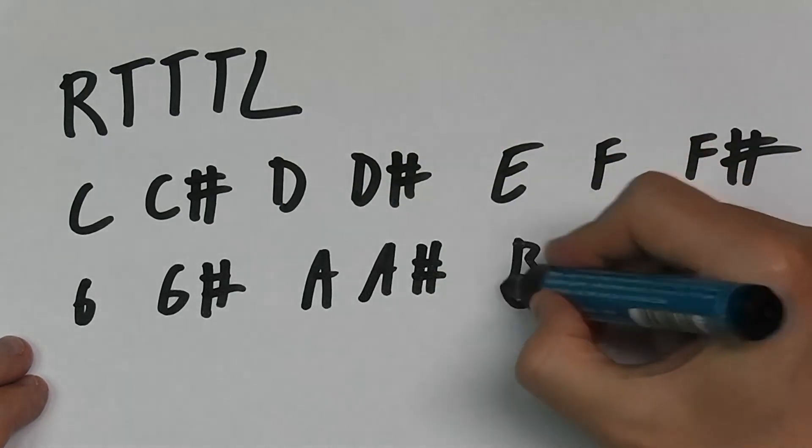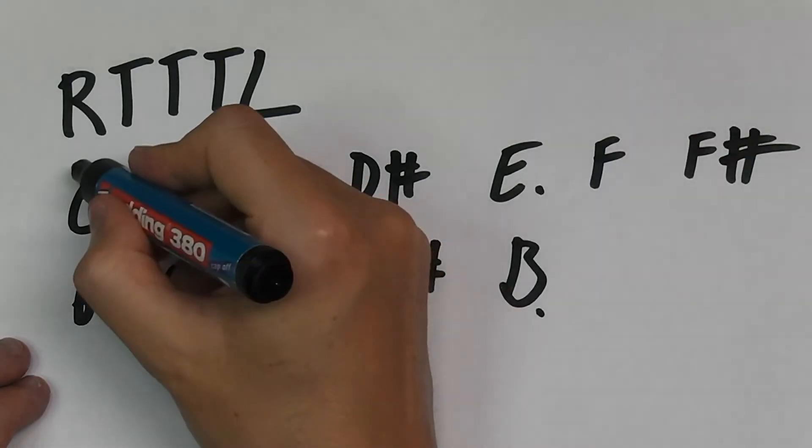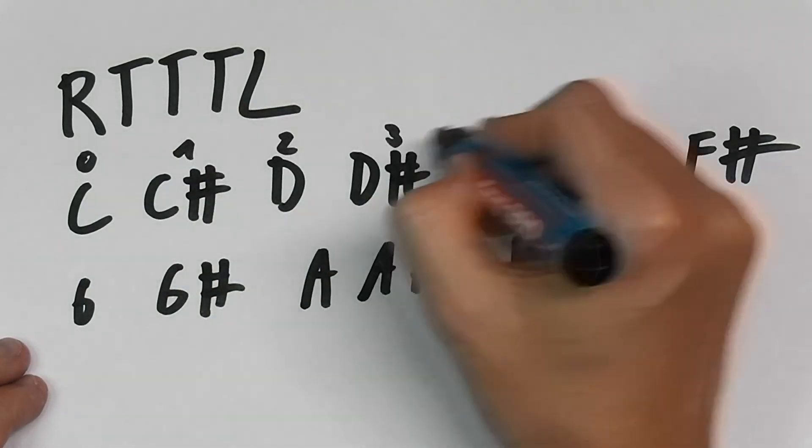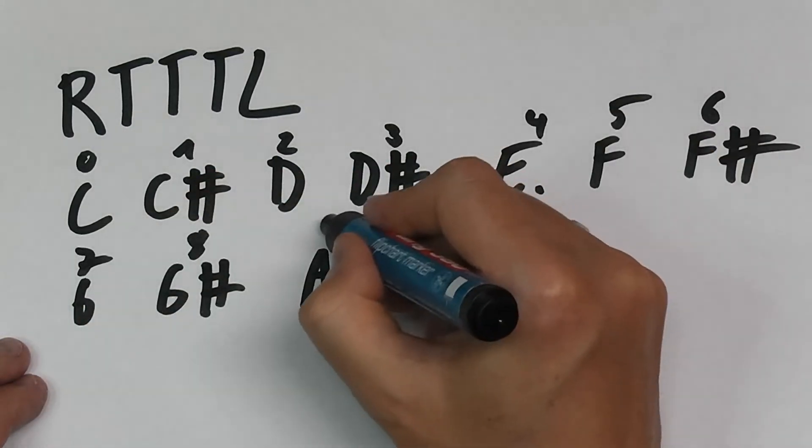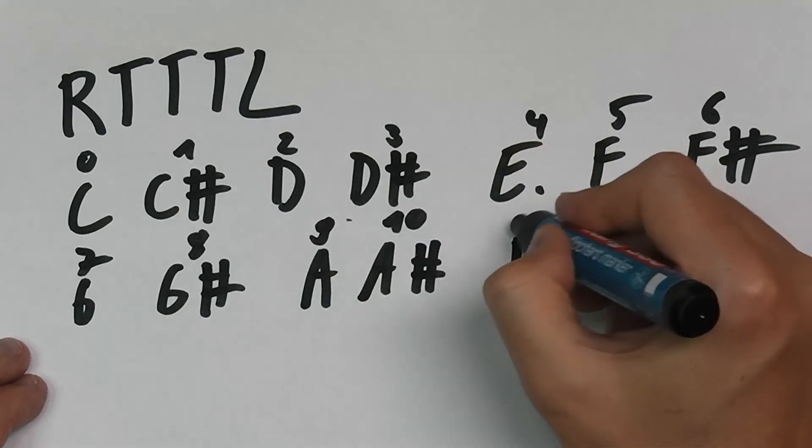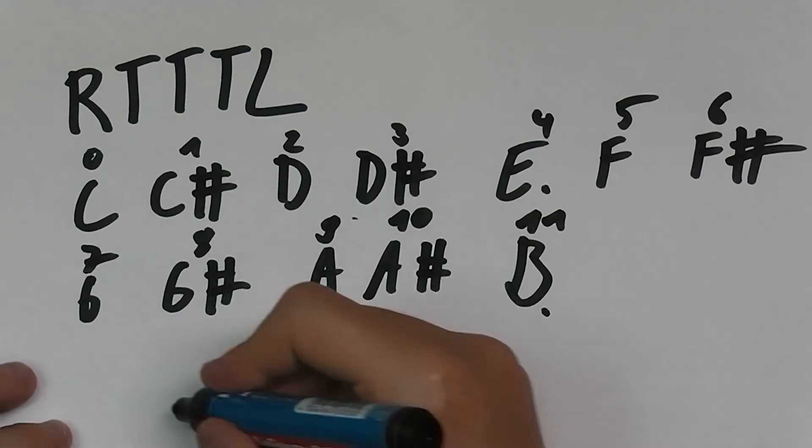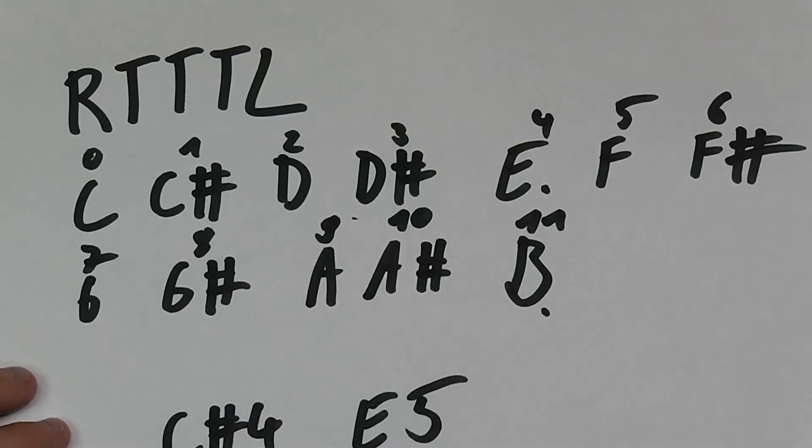The 12 notes are C, C sharp, D, D sharp, G, G sharp, and A sharp, and B. The B and the E don't have sharps. Each of those have an index ranging from 1 to 11, and each of those are associated with an octave which is usually a number from 4 to 8. You'll see notes like C sharp 4, E5, something like that.